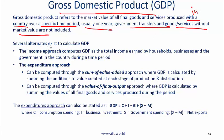There are several alternatives to calculating GDP. One is to use the income approach, which computes GDP as the total income earned by households, businesses, and the government in the country during a time period. The relationship here is that the total output of an economy is equal to the total income.